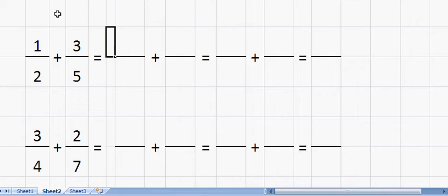Okay. Adding fractions. We're going to start by adding a half and three-fifths. The method we're going to use is called cross-multiplying, and it works with any pair of fractions.